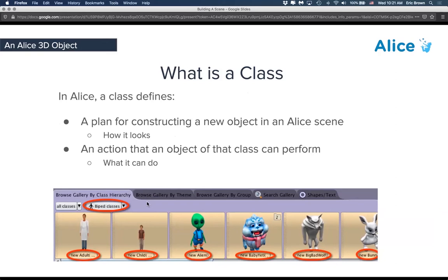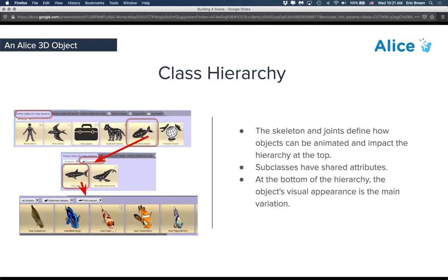As you go down the class hierarchy, it gives more information about that unique component of how it's constructed — really just around how it looks and potentially the size. Some of them might have unique things that they can do. An Alice class is defined by construction of the objects and what they can do: what joints are in there, which forms some of their animations. This is what the class hierarchy looks like. In terms of the story class, they all share that base skeleton. As you go down, it switches between fish and mammals because they have slightly different skeletons. Finally, you come to the lowest level, which is the individual class — does it look like a blue tang or a clownfish? This is also just the way you will navigate the gallery to find things you would want to add to your scene.